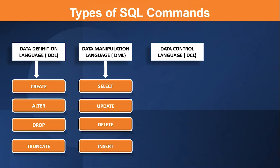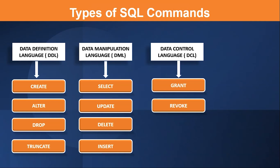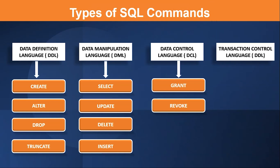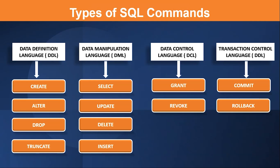The next one is Data Control Language, or DCL. DCL is responsible for maintaining the security, giving control access and permissions to the database. Commands under DCL are: Grant — used to grant permission to a user to access the database; and Revoke — used to cancel or take back the earlier granted permission. The last one is Transaction Control Language, or TCL. TCL has three commands: Commit — used to permanently save the transaction; Rollback — used to restore a transaction that is not saved; and Savepoint — used to hold a transaction temporarily, and it can be rolled back to its previous state at any point.